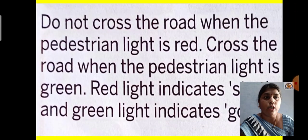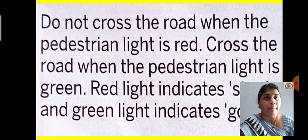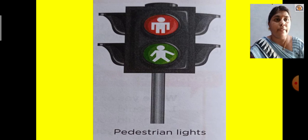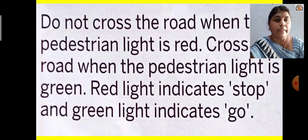Do not cross the road when the pedestrian light is red — red means stop, so you have to wait. Cross the road when the pedestrian light is green — green means you can walk and move. See the picture again: red light means stop, and green light means go.